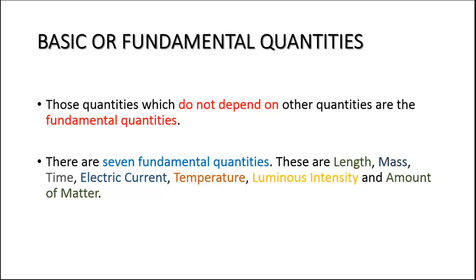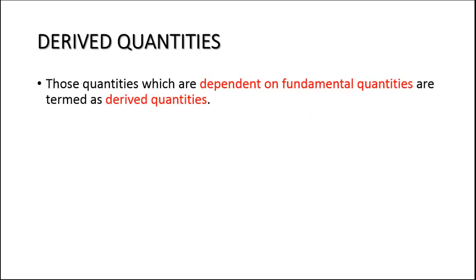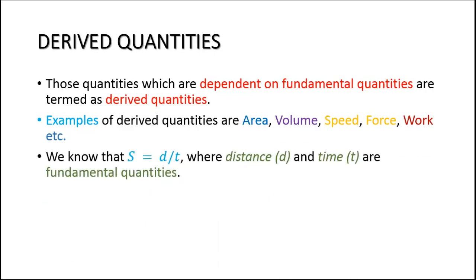Derived quantities: those quantities which are dependent on fundamental quantities are termed as derived quantities. Examples of derived quantities are area, volume, speed, force, and work. Derived quantities are actually derived from fundamental quantities.